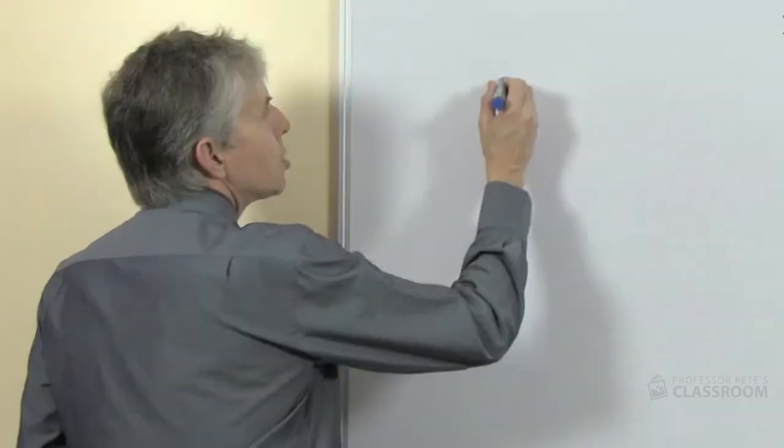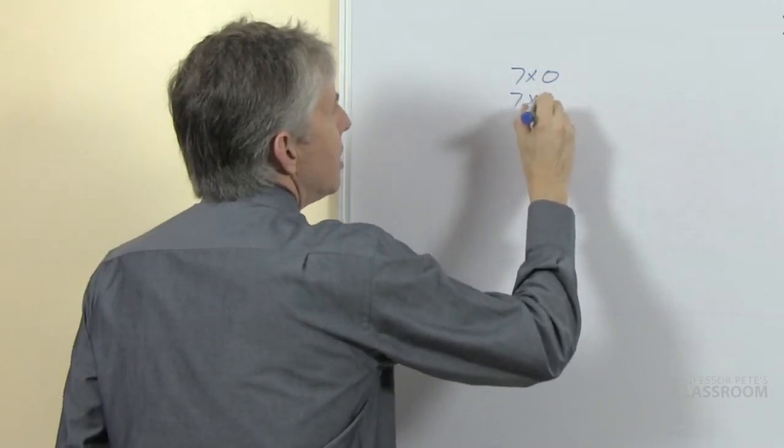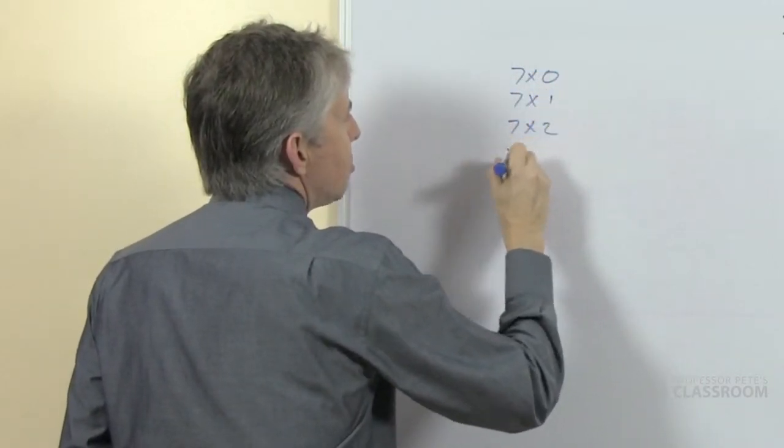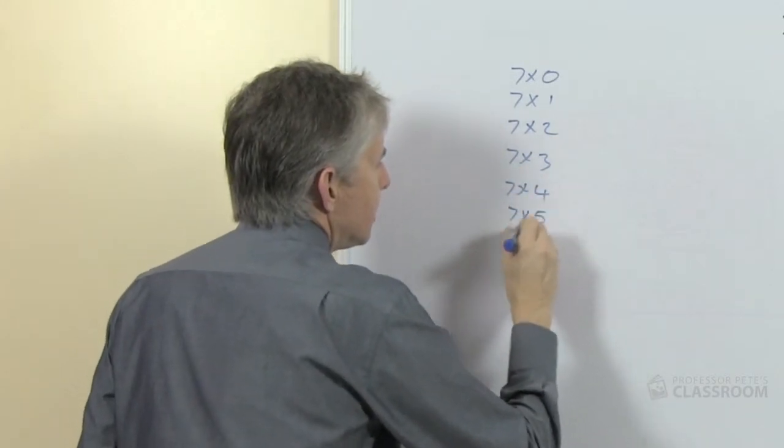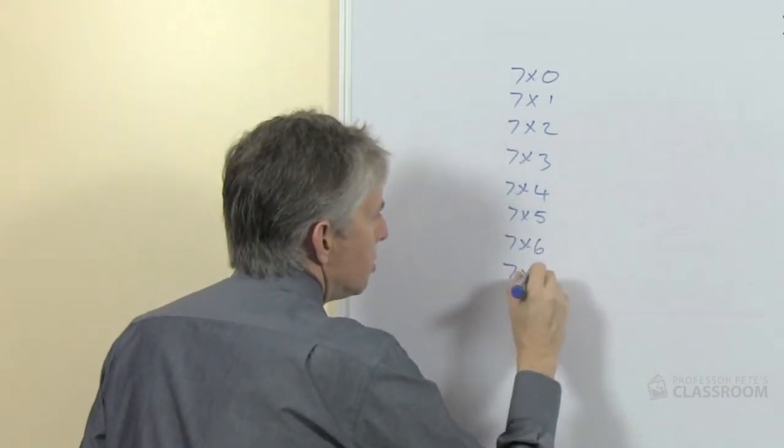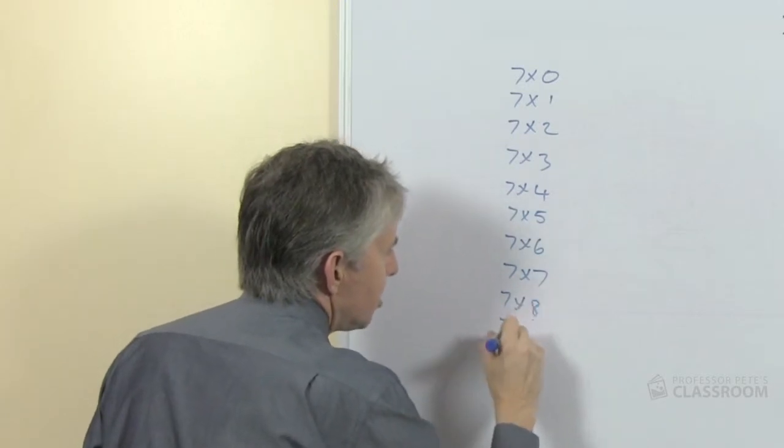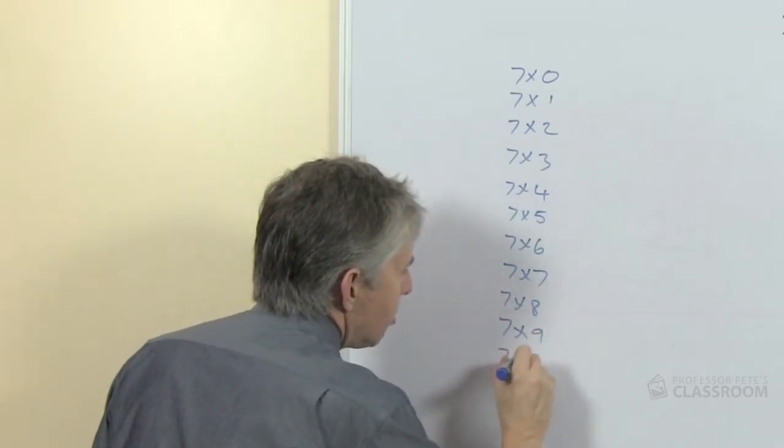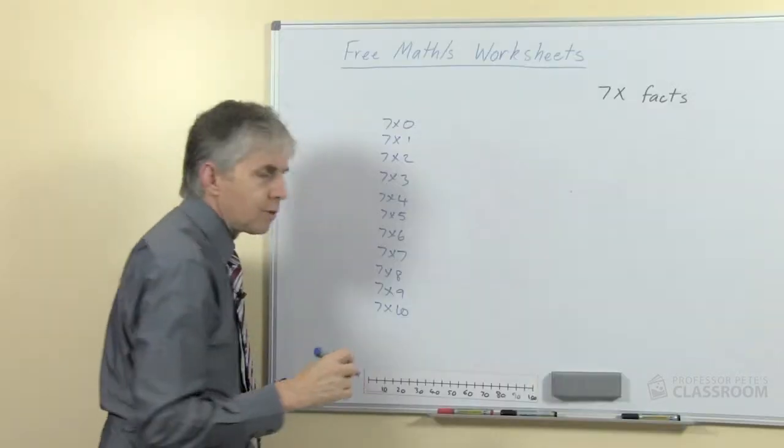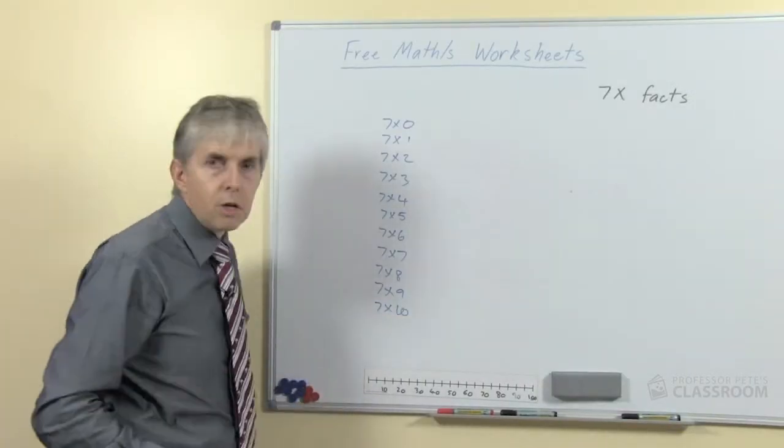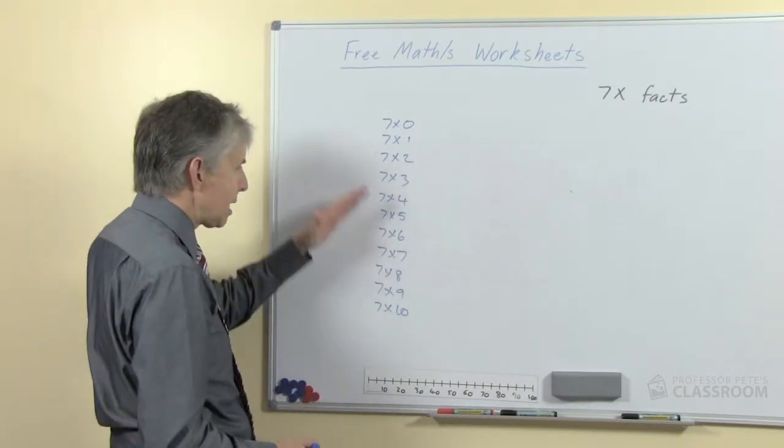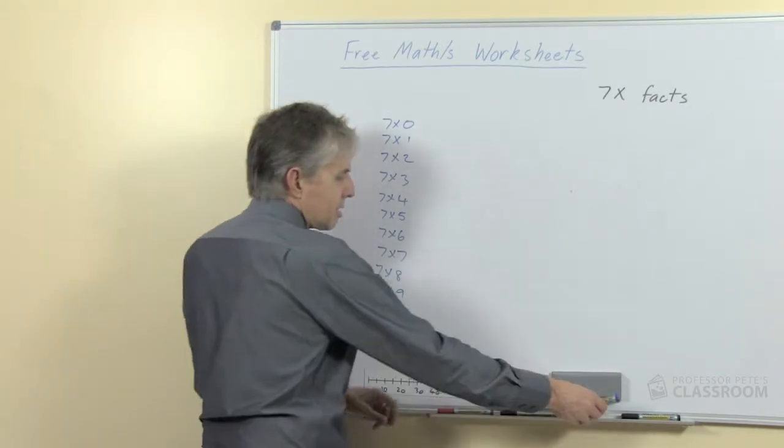So my approach would be to do something like this. Let's start with listing all the number facts that we need to know, like so. And I'm going to stop at ten, although obviously you could go to twelve depending on where you teach. Students may be only required to go to ten or they may be asked to go to twelve, but let's stop at ten for the sake of this exercise.